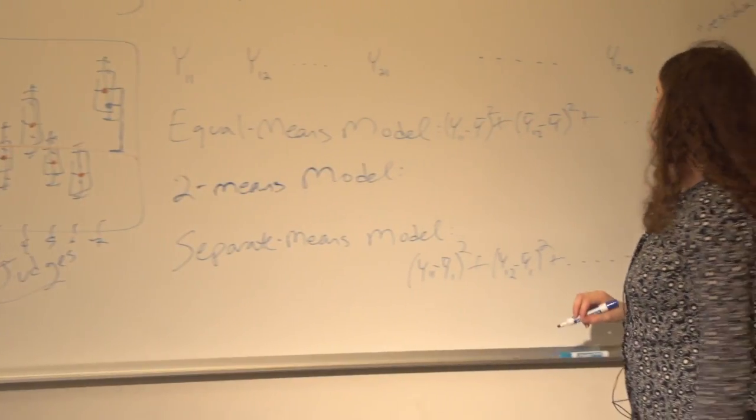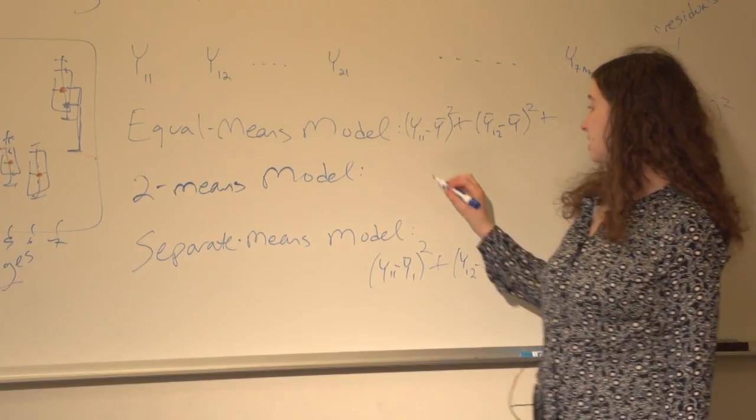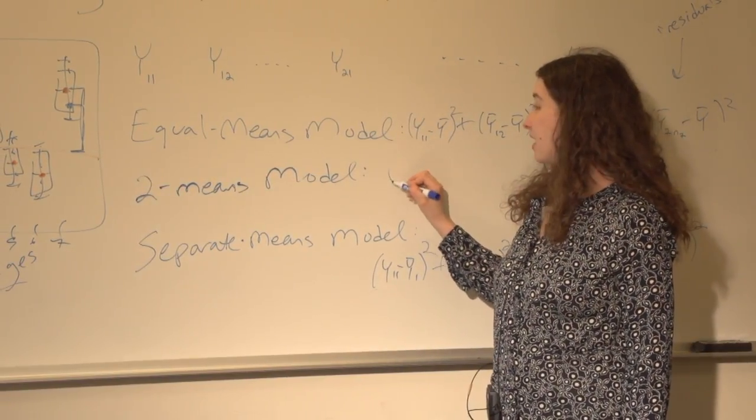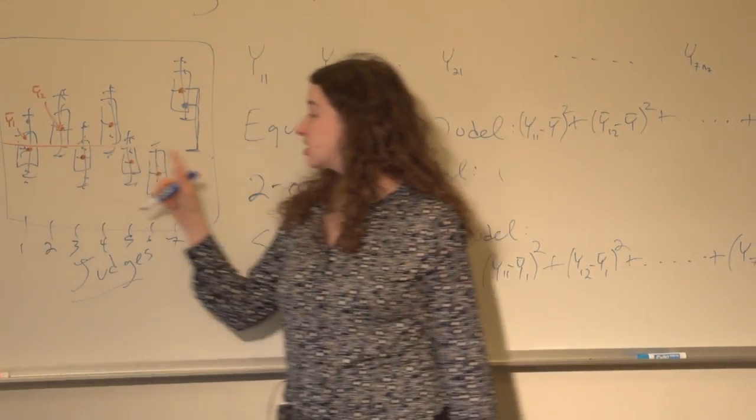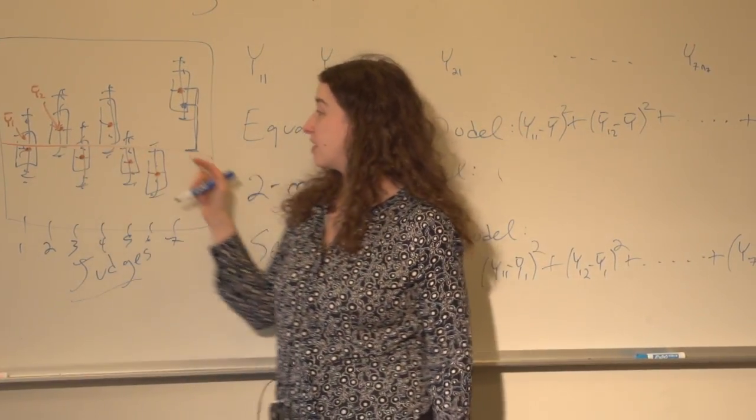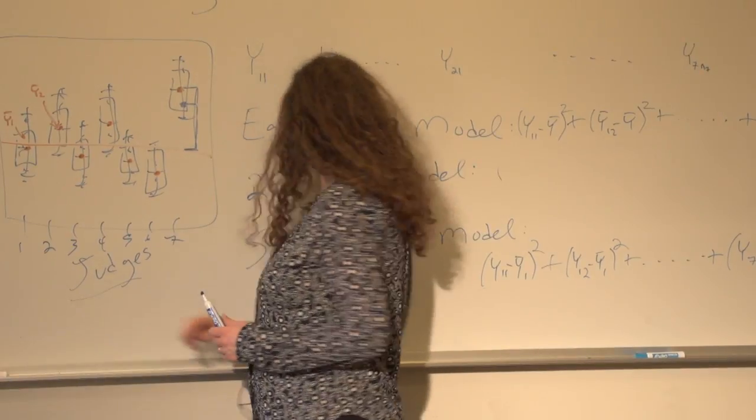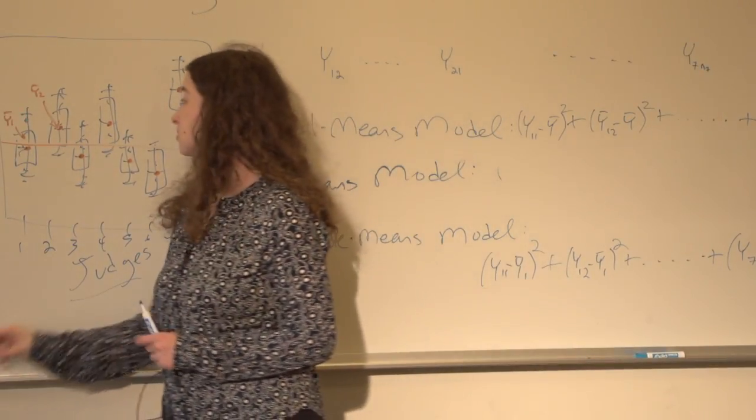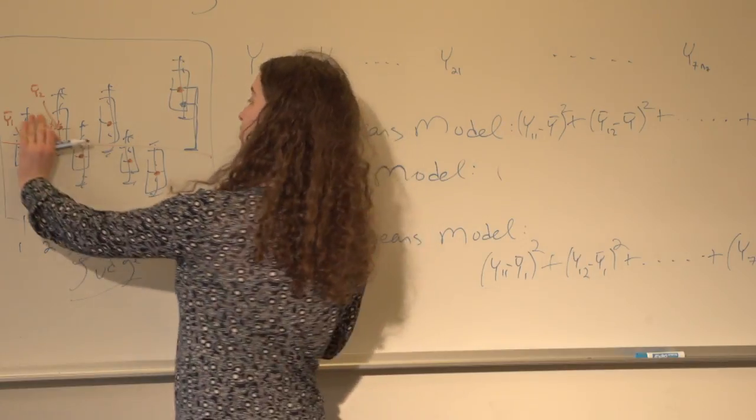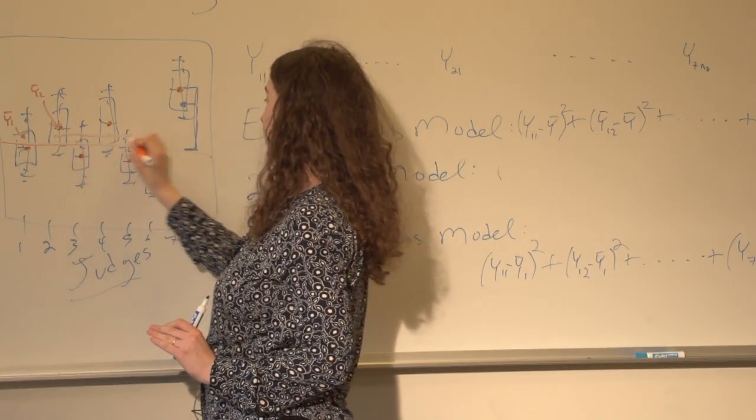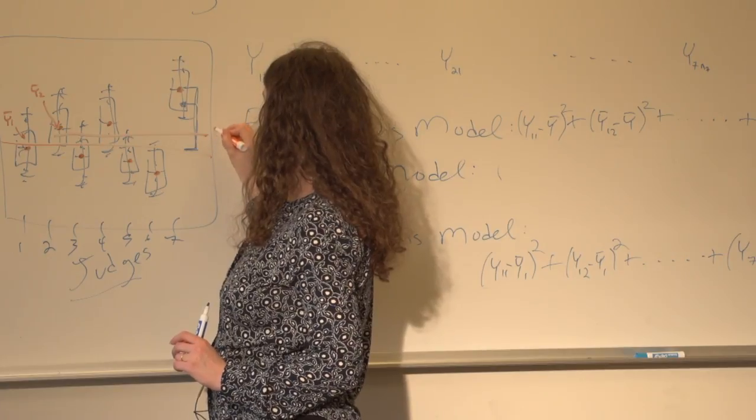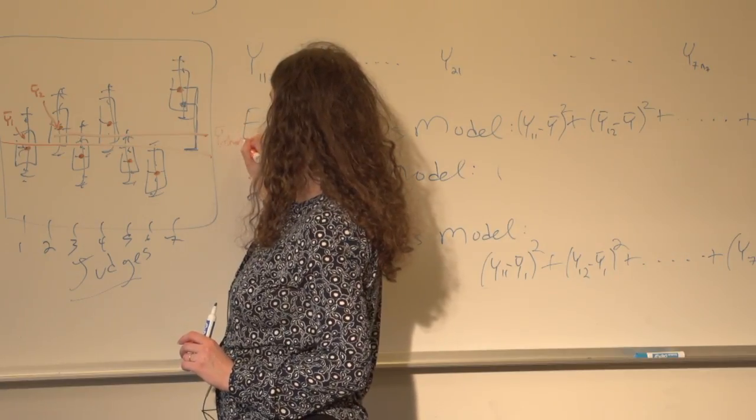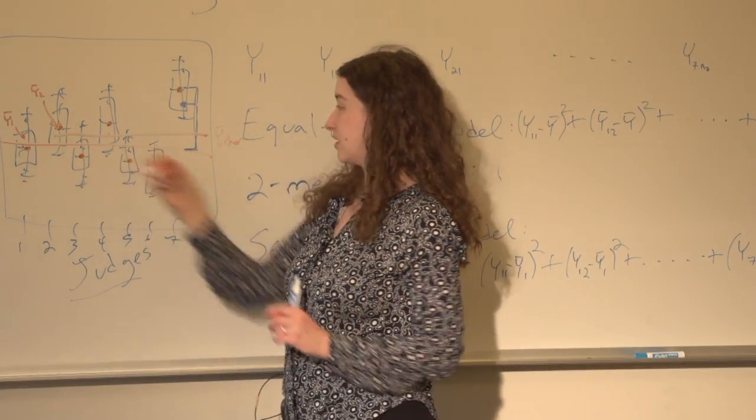What would the two-means model look like? Well, the two-means model might say I think that judges 2 through 7 should all have the same mean. Maybe it's up here, if I exclude the first group and just take the mean of all these values, right? I'll call it y bar other, okay? All the others except for the first one.